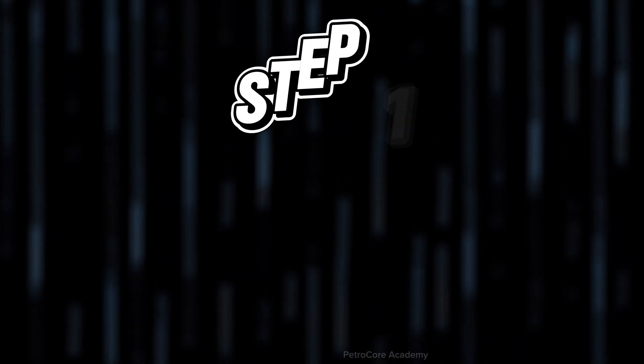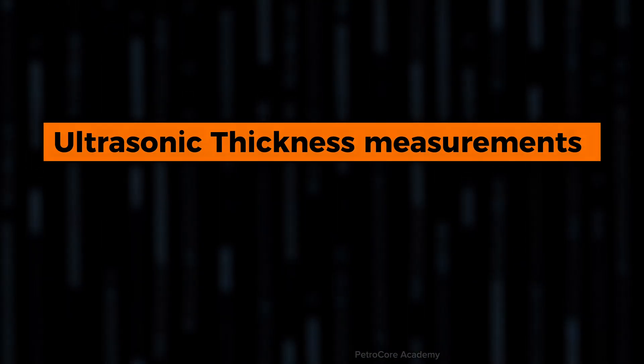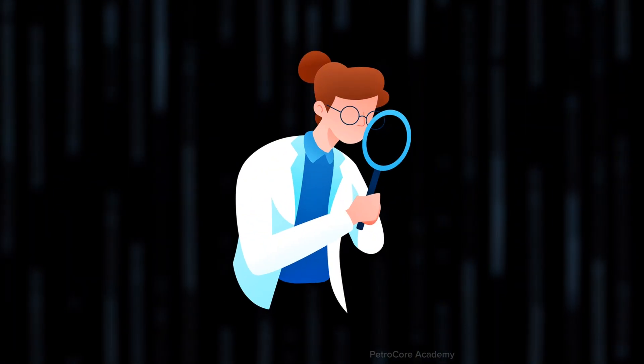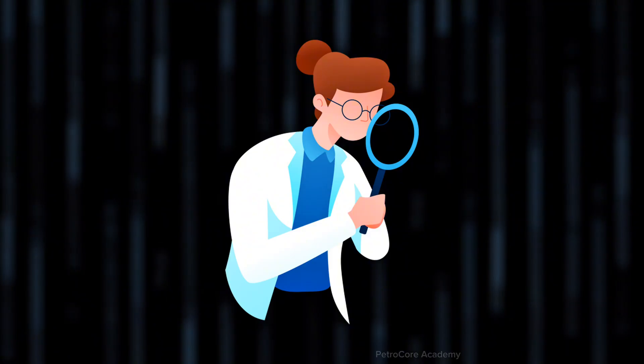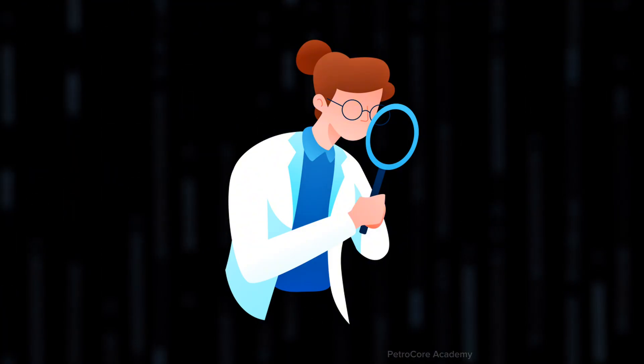So, how do we stop the sneak attack? Step 1: Find it. That means non-destructive testing like ultrasonic thickness gauging, eddy current testing, and sometimes, just good old-fashioned eyeballing. Although, you'll need a trained eye and possibly a magnifying glass the size of a dinner plate.